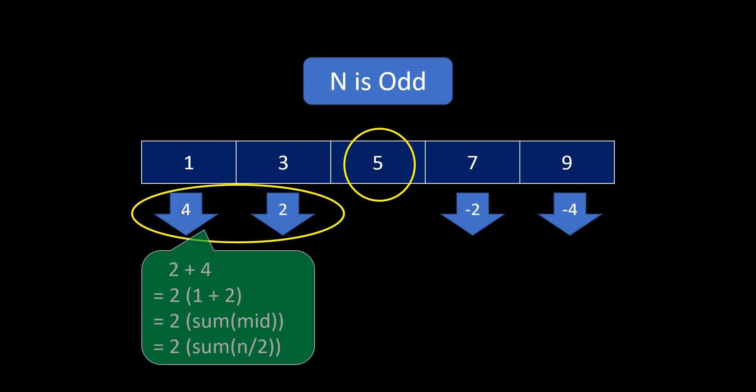Now, how do I get this 6? So, if you see this is 2 plus 4, which can also be rewritten as 2 multiplied by 1 plus 2. Now, over here, if you see, this is an arithmetic progression.